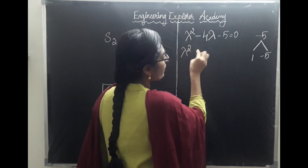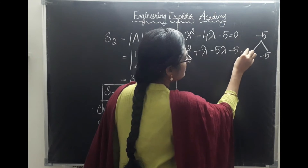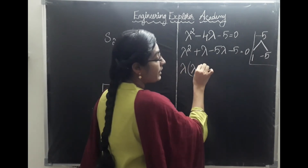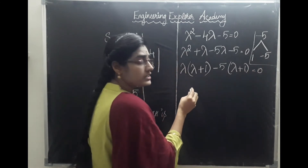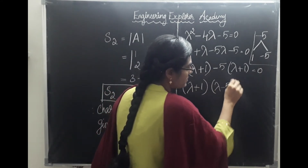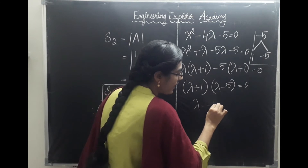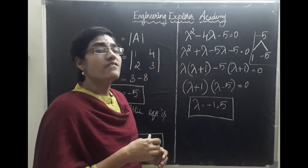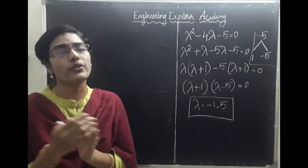Substituting the roots, we get lambda squared plus lambda minus 5 lambda minus 5 equals 0. Taking lambda common: lambda(lambda plus 1) minus 5(lambda plus 1) equals 0, so (lambda plus 1)(lambda minus 5) equals 0. Therefore lambda equals minus 1 and lambda equals 5. These eigenvalue values are very important to find A power N. Next we need to find lambda power N.